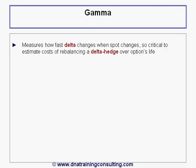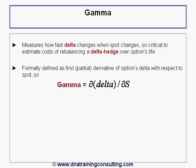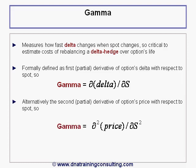The strict definition of gamma is d(delta)/dS, the first derivative of the option's delta with respect to the spot, which in mathematics makes it also the second derivative of the option's price with respect to the spot.